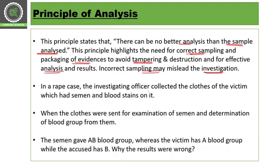For example, in a rape case, the investigating officer collects the clothing of the victim which had semen and blood stains on it. When the clothes were sent for examination — for semen analysis and determination of blood group — the semen gave AB blood grouping, whereas the victim has blood group A and the accused has blood group B. So the samples got mixed, giving wrong results. That is why we must collect samples properly and then analyze them properly. Best practice for collection, packaging, and forwarding of samples from the crime scene to the laboratory is really very important.